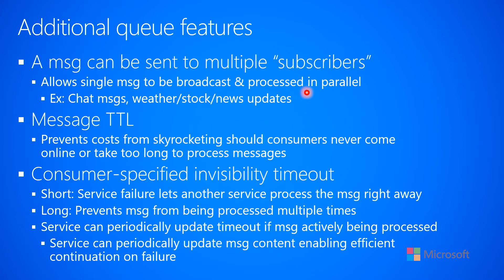Another feature you might take advantage of is a consumer-specified invisibility timeout. When a consumer pulls a message from the queue, it specifies how long that message should be invisible before another instance can pull the same message. You want to make the invisibility timeout short so that if you get a service failure, the message becomes visible right away so that another service instance can start processing it. On the other hand, if you're still in the middle of processing it, it might become visible and then another instance is also processing it, and now you have two instances processing the same message at the same time.